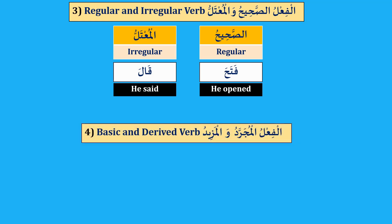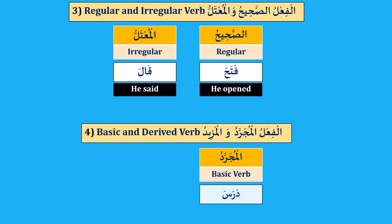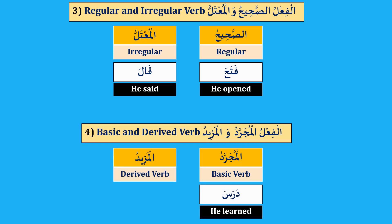Number four: al-Fi'l al-Mujarrad wal-Mazeed, basic and derived verb. Al-Mujarrad, basic verb — darasa, he studied, he learned. Al-Mazeed, derived verb — darrasa, he taught. We added tashdid, and it becomes a derived verb — darrasa, he taught.